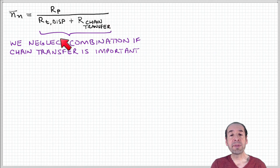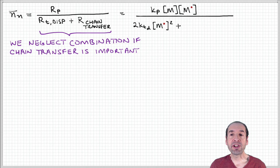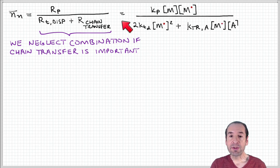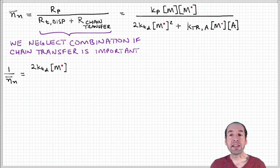Now I'm neglecting combination because if chain transfer is important, intuitively, this free radical is being removed from the growing chain in a mechanism that is different from the combining of two growing chains together. So that's inherently out of the picture right now, so we're going to ignore it. So when I substitute in these rate laws associated with these three processes, I obtain this expression, then I can analyze it first by taking the inverse of this.